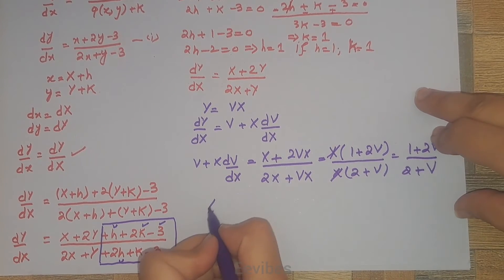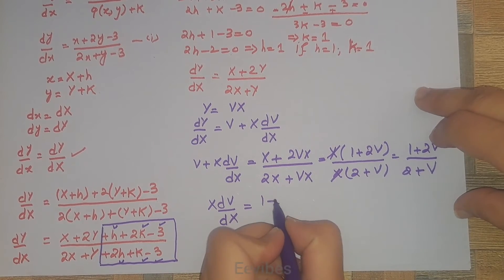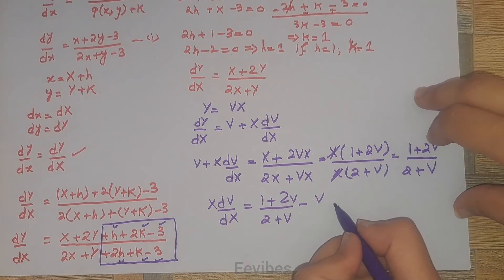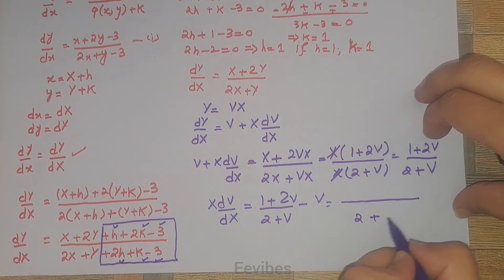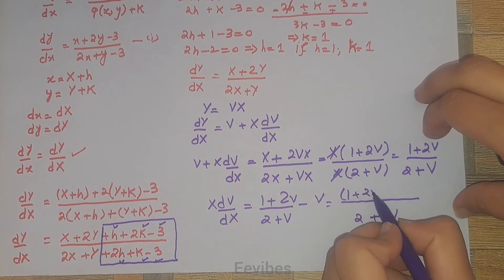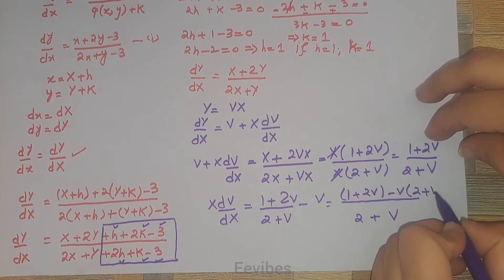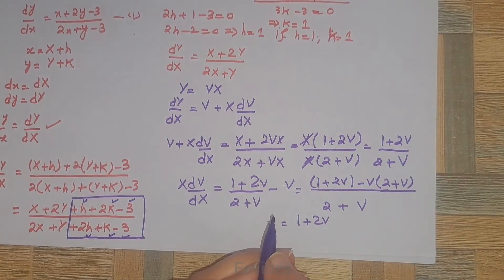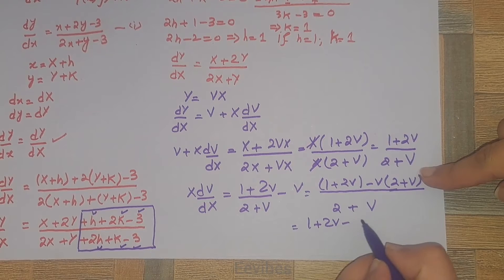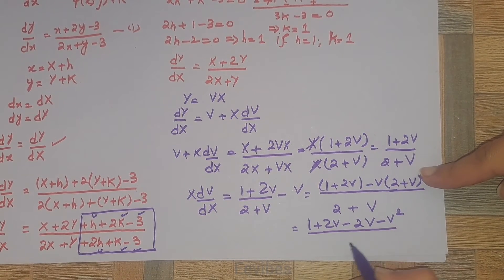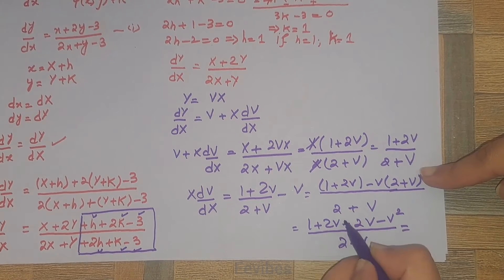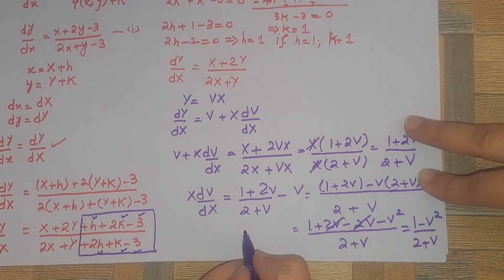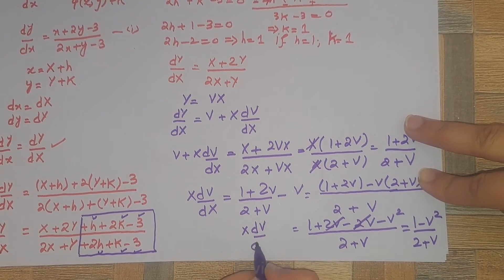Simplifying further: X·dv/dX = (1 + 2v)/(2 + v) − v. Taking the LCM gives (1 + 2v − v(2 + v)) / (2 + v) = (1 + 2v − 2v − v²) / (2 + v) = (1 − v²) / (2 + v). So X·dv/dX = (1 − v²) / (2 + v).